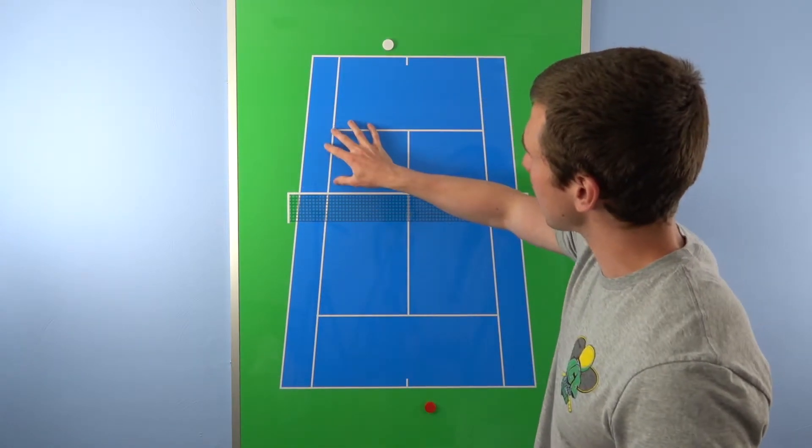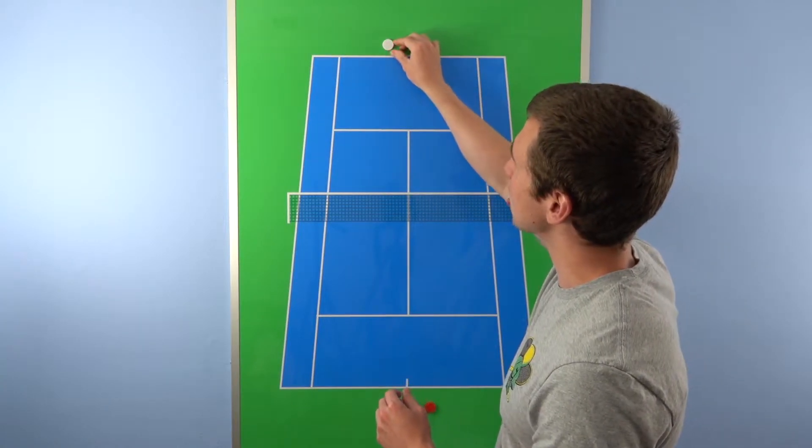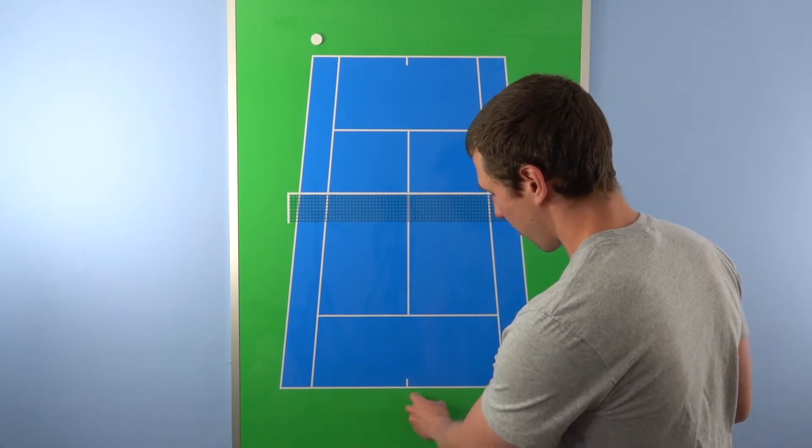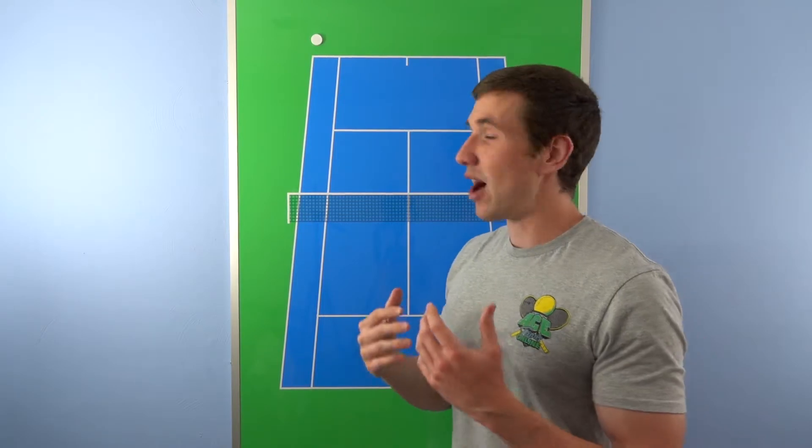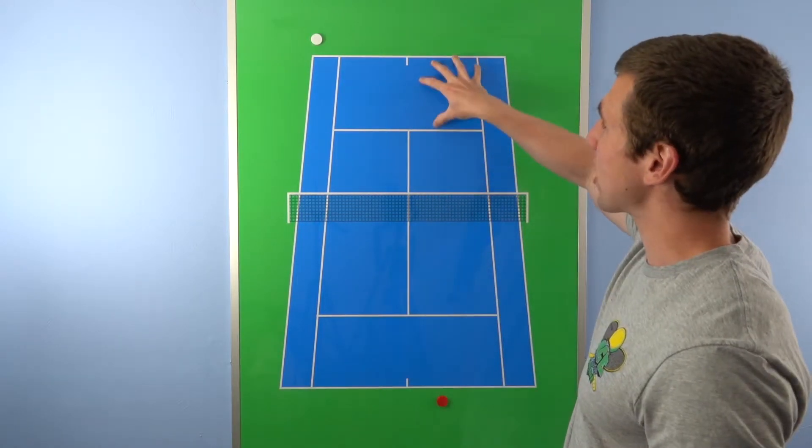So you're in that cross-court exchange, and let's say you hit a nice shot, you get your opponent off-court. Now, what do you see? You see a wide open court, so you've just made up your mind, hey, my opponent is so far off the court, I'm going to hit into the open court, I'm going to win the point.